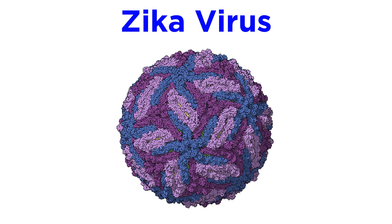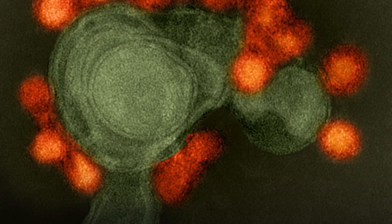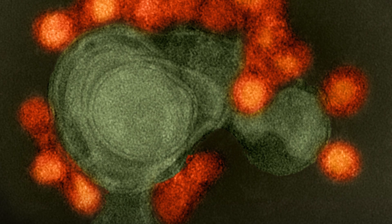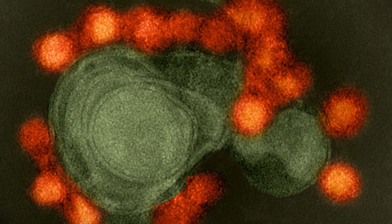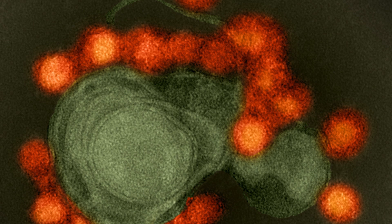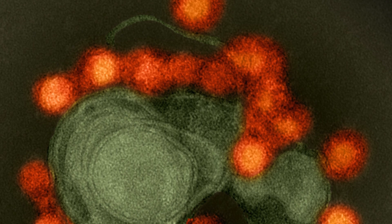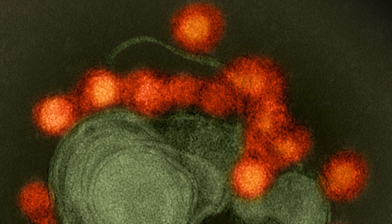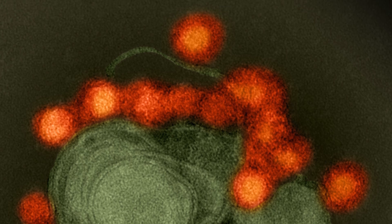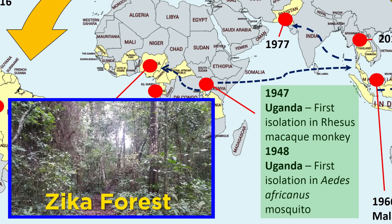Continuing with viruses that have been newsworthy in recent years, it's time to discuss Zika virus. Even though Zika virus was initially isolated over seventy years ago, it hadn't been studied all that closely or really considered to be a relevant human pathogen for the majority of that time. We knew that the virus was isolated in the Zika forest of Uganda during a routine surveillance check for yellow fever back in 1947.